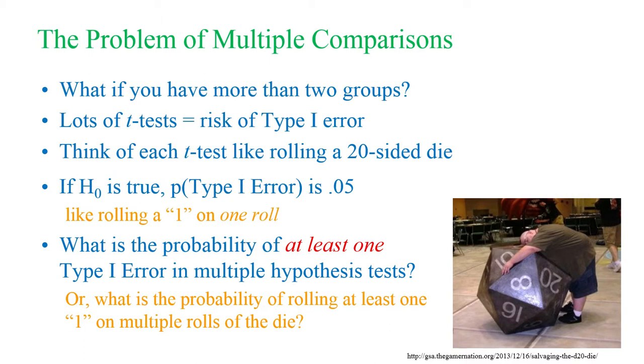If the null hypothesis is true, what's the probability of at least one Type 1 error on multiple tests? This is a probability issue. It's sort of like saying every individual toss of a coin, the probability of it coming up heads is 0.5. But if you toss the coin 12 times, what's the probability that it will come up heads at least once? Much higher than 0.5. You can say, what's the probability of rolling at least one roll of one on multiple rolls of the die?